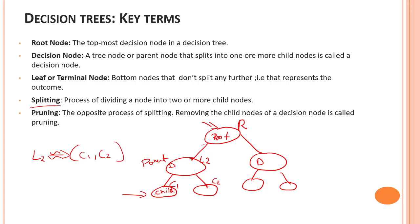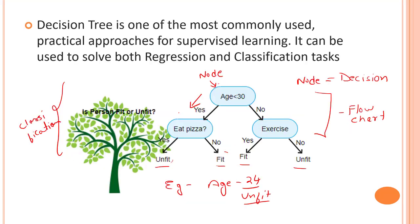I hope the terminology makes a bit of sense. Now looking back at the fit/unfit example: this is the root node, and all of these below it are decision nodes or interior nodes. These can also be called parent nodes, and what we have at the bottom are the leaves or outcomes — unfit, fit, fit, unfit. The exercise and eat-pizza nodes are child nodes of the age node, which is also the root node.